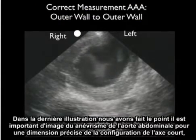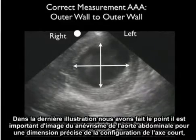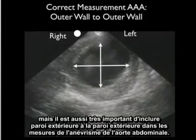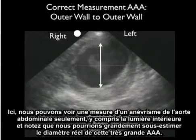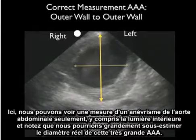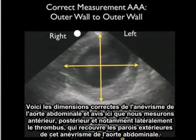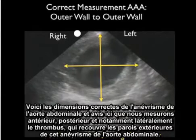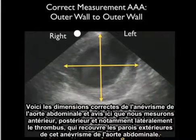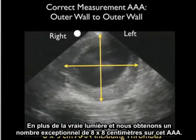It's important to image the abdominal aortic aneurysm for an accurate dimension in the short axis configuration, but it's also very important to include outer wall to outer wall in the measurements. Here we can see a measurement of a triple A only including the inner lumen, and notice that we could vastly underestimate the true diameter. The correct dimensions include measuring anterior, posterior, and laterally, including the thrombus that coats the outer walls, in addition to the true lumen, and we get a measurement of 8 by 8 centimeters on this triple A.